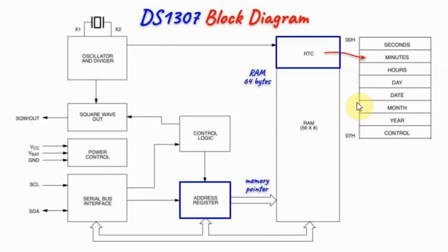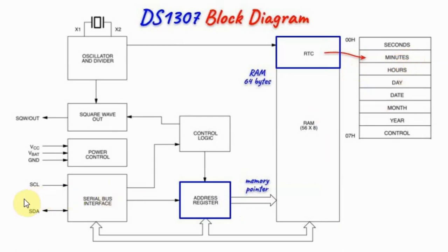In another example, to read the minutes and hours from the real-time clock RAM, we first point to minutes at address 01 by sending the byte 01 over the bus to program the address register. Now we are pointing to minutes, and the next step is to send an I2C read operation to read from minutes and hours.